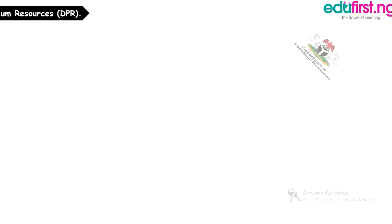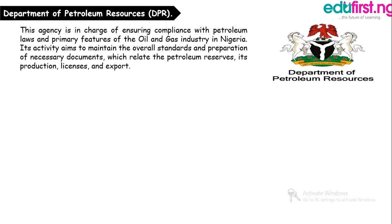We also have the Department of Petroleum Resources. This agency is in charge of ensuring compliance with petroleum laws and practices of the oil and gas industry in Nigeria. Its activity aims to maintain the overall standards and preparation of necessary documents which relate to the petroleum reserves, its production, licenses, and export.